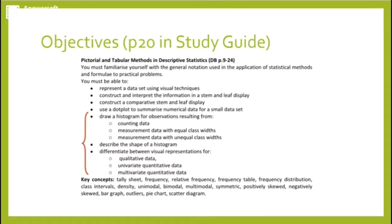That is drawing a histogram for observations resulting from counting data, measurement data with unequal and equal class widths, describing the shape of a histogram, and differentiating between visual representations for qualitative data, univariate quantitative data, and multivariate quantitative data.